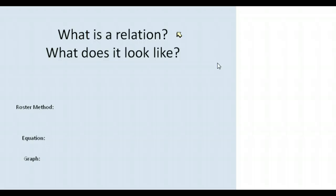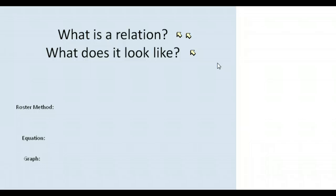What is a relation and what does it look like? A relation is any relationship between X and Y. It can be defined in many different ways — they may give you just sets of points, they may give you a graph, or they may tell you a certain relationship that X and Y have with one another.